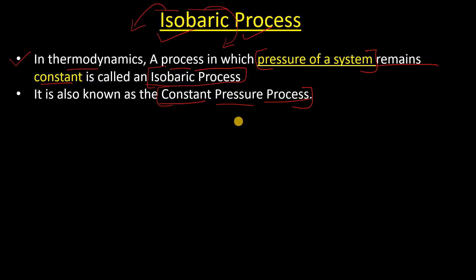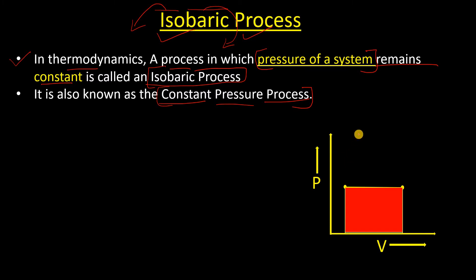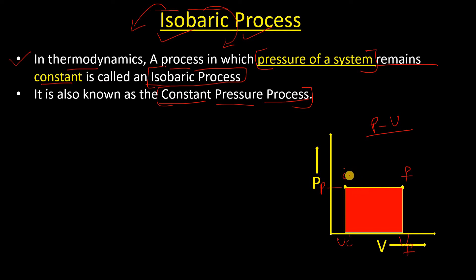We will see the indicator diagram — or PV diagram — for the isobaric process. Here you can see the PV diagram: there is an initial state and a final state. The pressure is P throughout. In the initial state, my volume was Vi, and in the final state, my volume is Vf. During the process from initial to final state, the pressure is constant and does not change, but the volume changes from Vi to Vf.